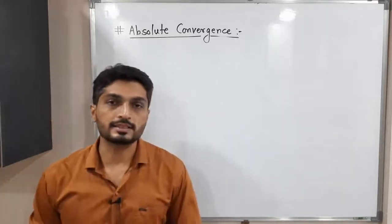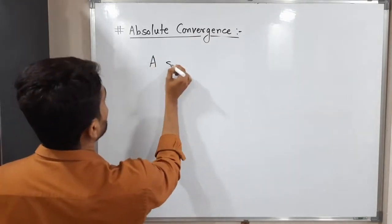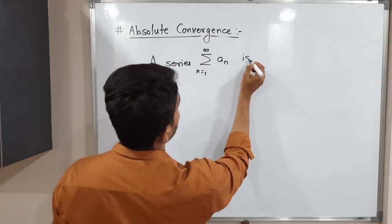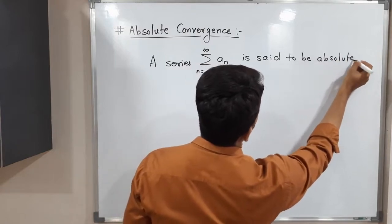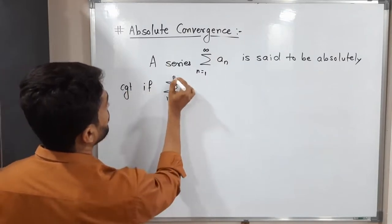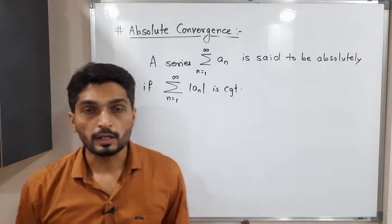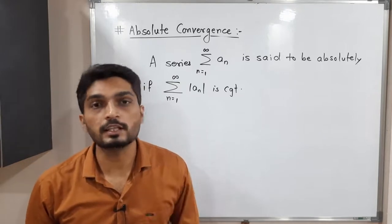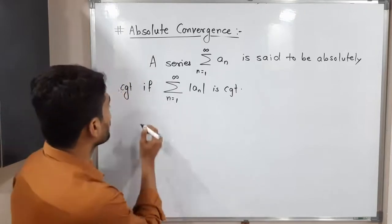Let us discuss the concept of absolute convergence. A series summation a_n, with n running from 1 to infinity, is said to be absolutely convergent if the summation of |a_n| from n=1 to infinity is convergent. So if you apply modulus to each term and take the summation, and that series is convergent, then we say the given series summation a_n is absolutely convergent.